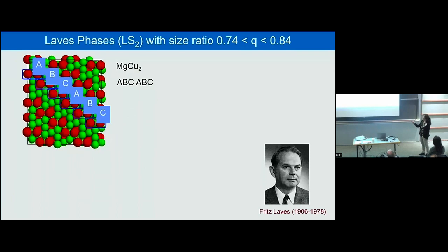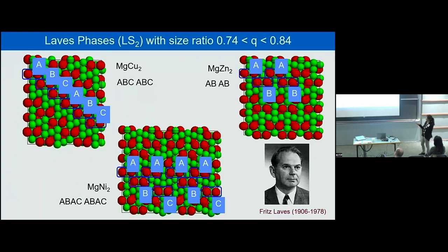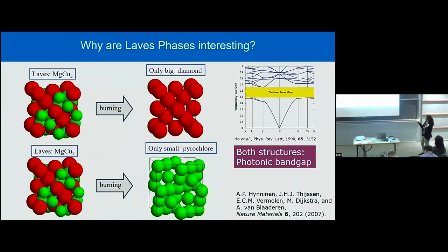There are actually three types of Laves phases, named after Fritz Laves. There is a magnesium copper two phase. These Laves phases are built up of dimers of big spheres, and these dimers form a hexagonal lattice that can be stacked in different ways: ABC stacking gives the magnesium copper two phase, ABAB stacking gives the magnesium zinc two phase, and a different ABC stacking gives the magnesium nickel two phase. A free energy calculation for hard spheres shows that the magnesium zinc two phase is the most stable, but the magnesium copper two phase is more interesting because of photonic properties — it consists of a diamond lattice of big spheres and a pyrochlore lattice of small spheres, both of which exhibit photonic band gap structures.